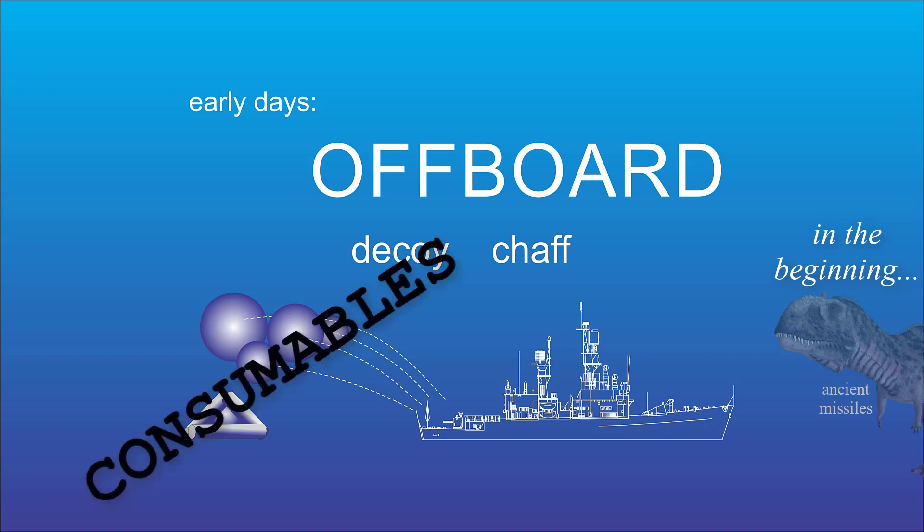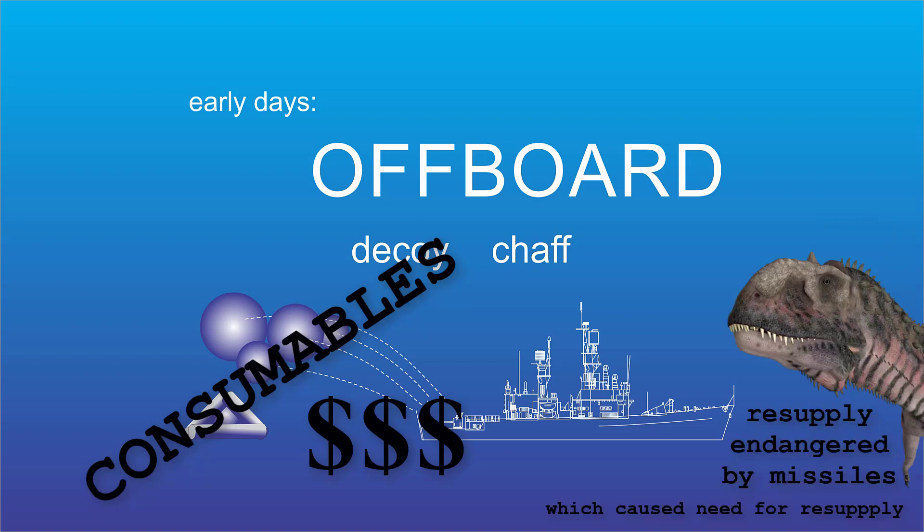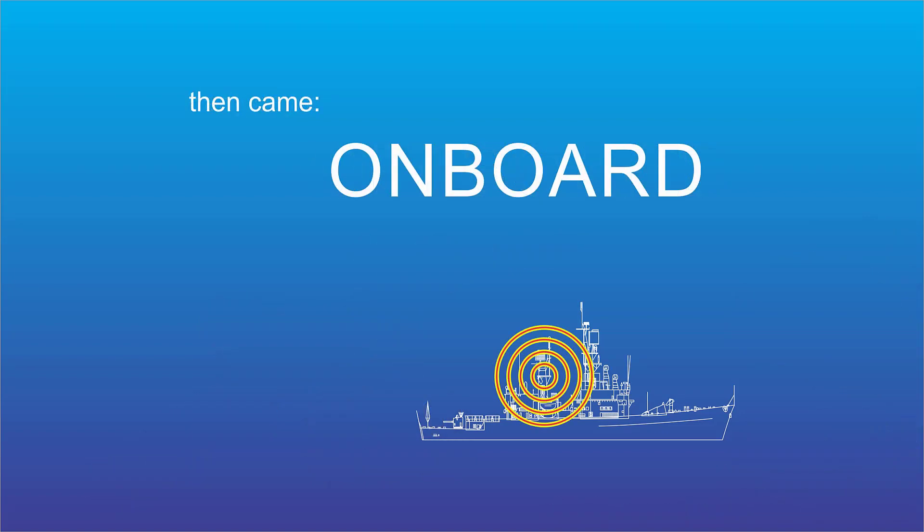Plus the stuff that's worth throwing overboard tends to be expensive, and of course there are resupply issues. So the solution is, how about onboard jamming, where the ship carries an electronic jammer to fool the missile? That way we don't have to resupply chaff rounds or decoys and we never run out of electricity to run the jammer.